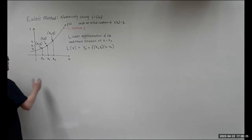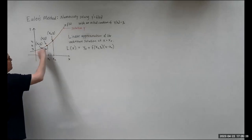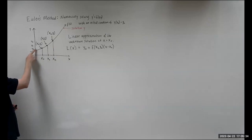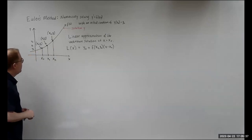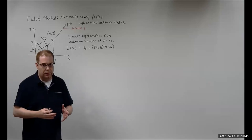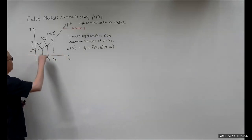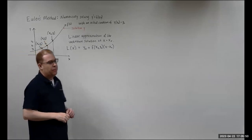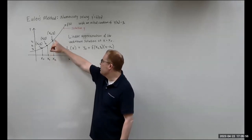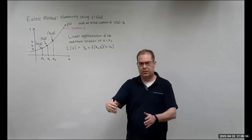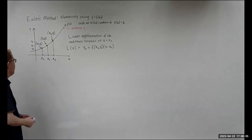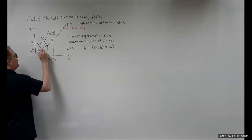Here's what we have: this curve represents the solution to your first-order differential equation. Here's our initial value, x₀, y₀. The goal is to work with this point and come up with an iterative formula that gives us an approximation for y₁. Once we do that, we can use the same idea to get approximations for y₂, and so on. I'm going to draw in the tangent line at x₀ for reference.